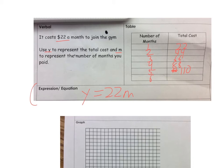6 months is going to be 132. See, there we go. I just made a mistake, but I caught it. So here's my total cost.